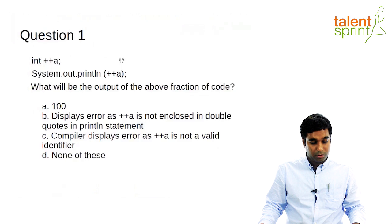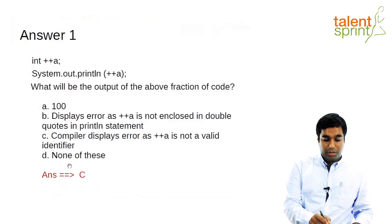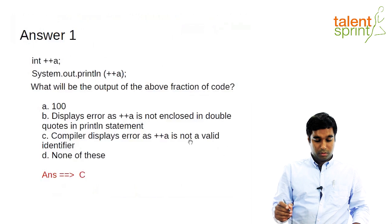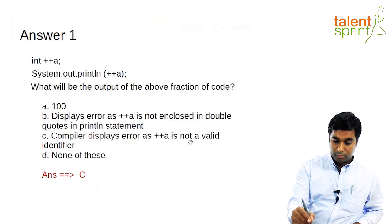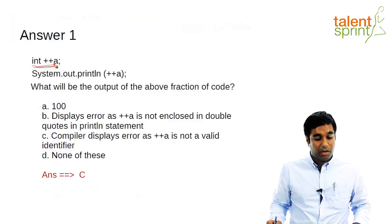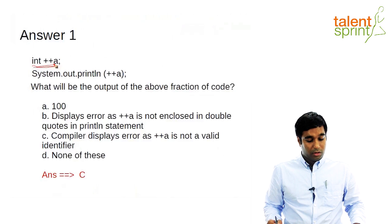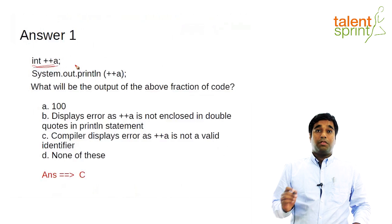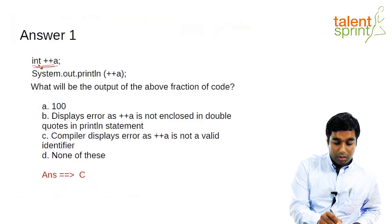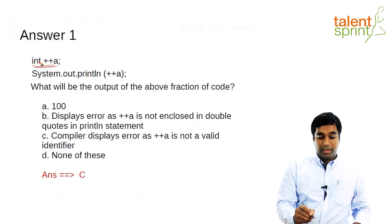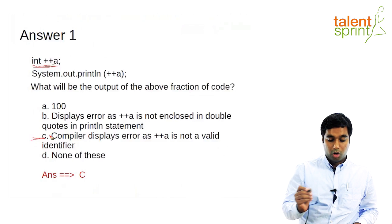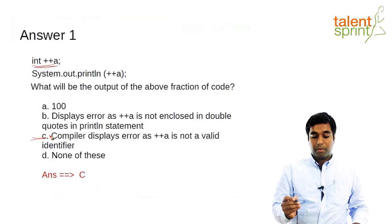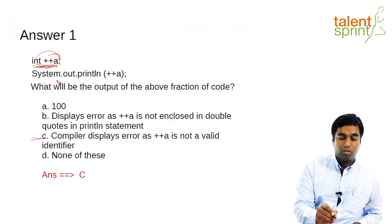The answer of this question is C, which means the compiler is going to display an error. If you see this declaration of the variable A which says int plus plus A, this declaration is not right. The rule of an identifier is that the variable has to start with an alphabet. Since the variable name is starting with a plus sign, this is not a right declaration, and hence the compiler displays an error.